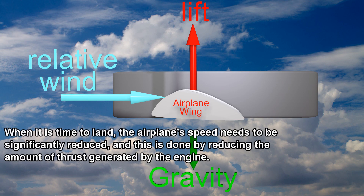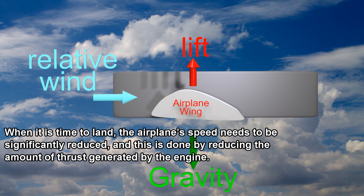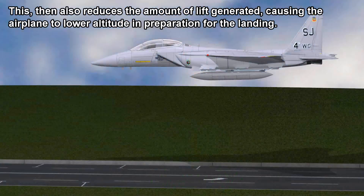When it is time to land, the airplane's speed needs to be significantly reduced, and this is done by reducing the amount of thrust generated by the engine. This then also reduces the amount of lift generated, causing the airplane to lower altitude in preparation for the landing.